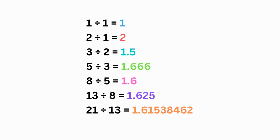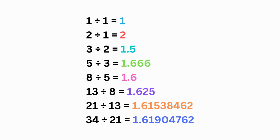And now for the ratio: 1 ÷ 1 = 1, 2 ÷ 1 = 2, 3 ÷ 2 = 1.5, 5 ÷ 3 = 1.666, 8 ÷ 5 = 1.6, 13 ÷ 8 = 1.625, 21 ÷ 13 = 1.61538462, and 34 ÷ 21 = 1.61904762.